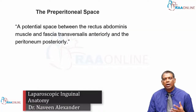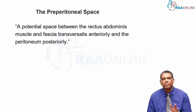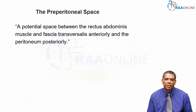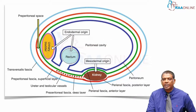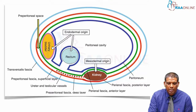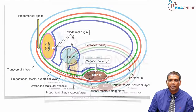All the anatomy that we are dealing with in a laparoscopic inguinal hernia repair is the preperitoneal space. This is nothing but a potential space between the rectus abdominis muscle and fascia transversalis anteriorly and the peritoneum posteriorly. If this is a cut section of the abdomen, you can see the midline, the urinary bladder, and right anterior to it will be the preperitoneal space, bounded by the rectus abdominis as well as the transversalis fascia anteriorly.